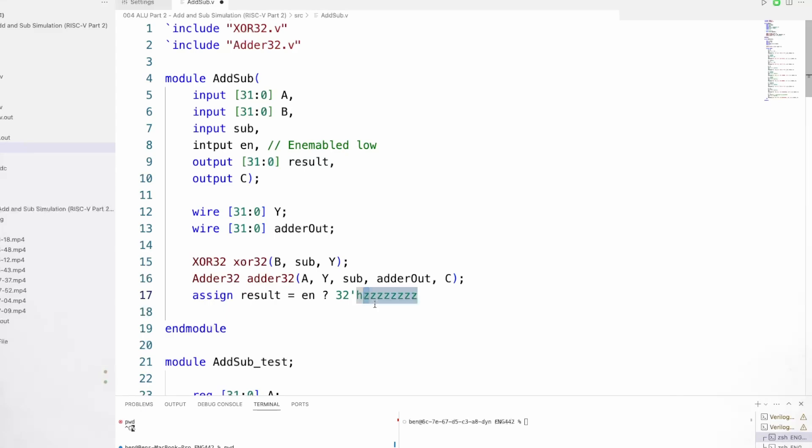Since this is hex, each of these Z's actually represents four Z bits, four high impedance bits. So I've got eight of them there to get our 32. If our enable signal is low, then we are enabled and we need to output our adder. And that's it. That's all the changes that we need to the module.